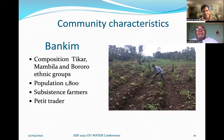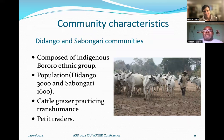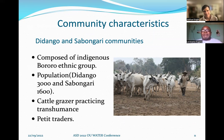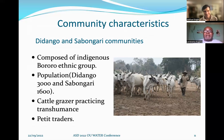Bankim is made of several ethnic groups including Bororos, with a population of 1,800 — basically subsistence farmers and small traders. Jidango and Sabangare are made up of the indigenous Bororo community, with populations of about 3,000 and 1,600 respectively. They are mainly categorized as practicing transhumance: in the dry season they go down to the slopes with their animals to look for pasture, and in the rainy season they go back onto the hills. Some are also small traders.